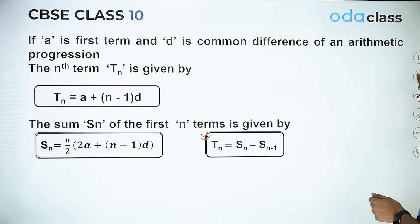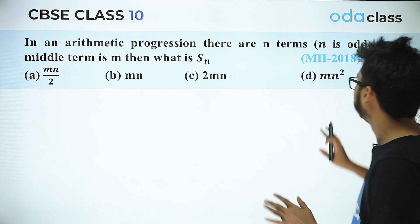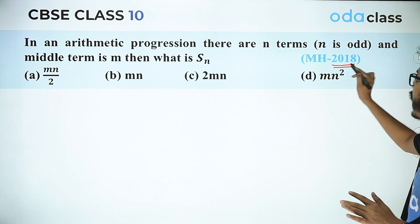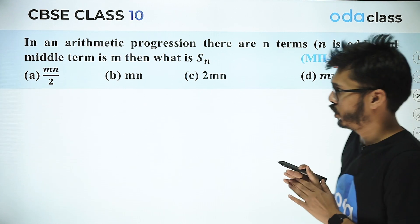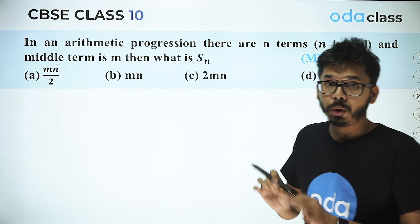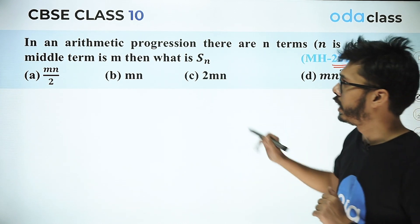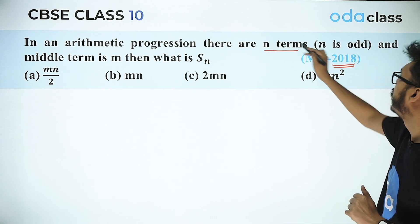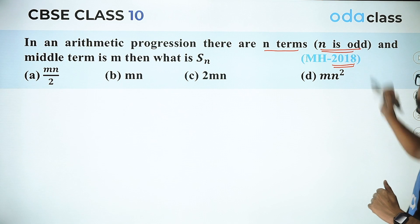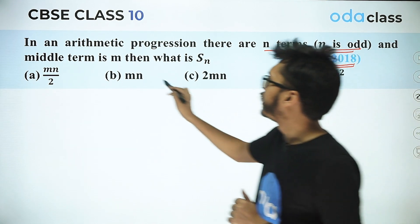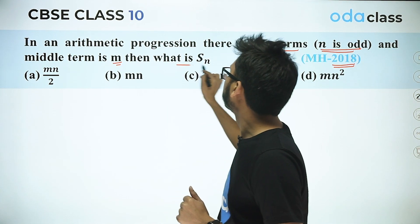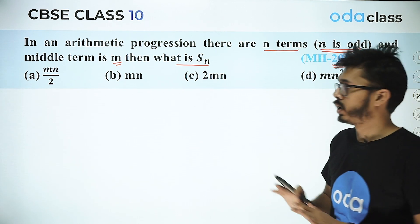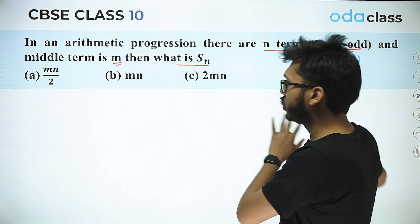The first question is from NTSC Stage 1, 2018, Maharashtra paper. In an arithmetic progression, there are n terms — specifically an odd number of terms — and the middle term is m. What is Sn? There are two methods to solve this: a trick and a standard method.